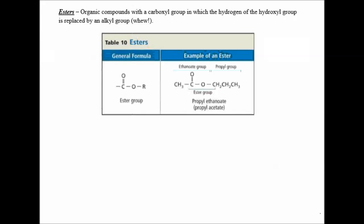So we are on page 39. An ester is an organic compound with a carboxyl group, in which the hydrogen of the hydroxyl group is removed and replaced with an alkyl group. So here is our carboxyl group, and here is our alkyl group. Since this has three carbons, this is propyl.